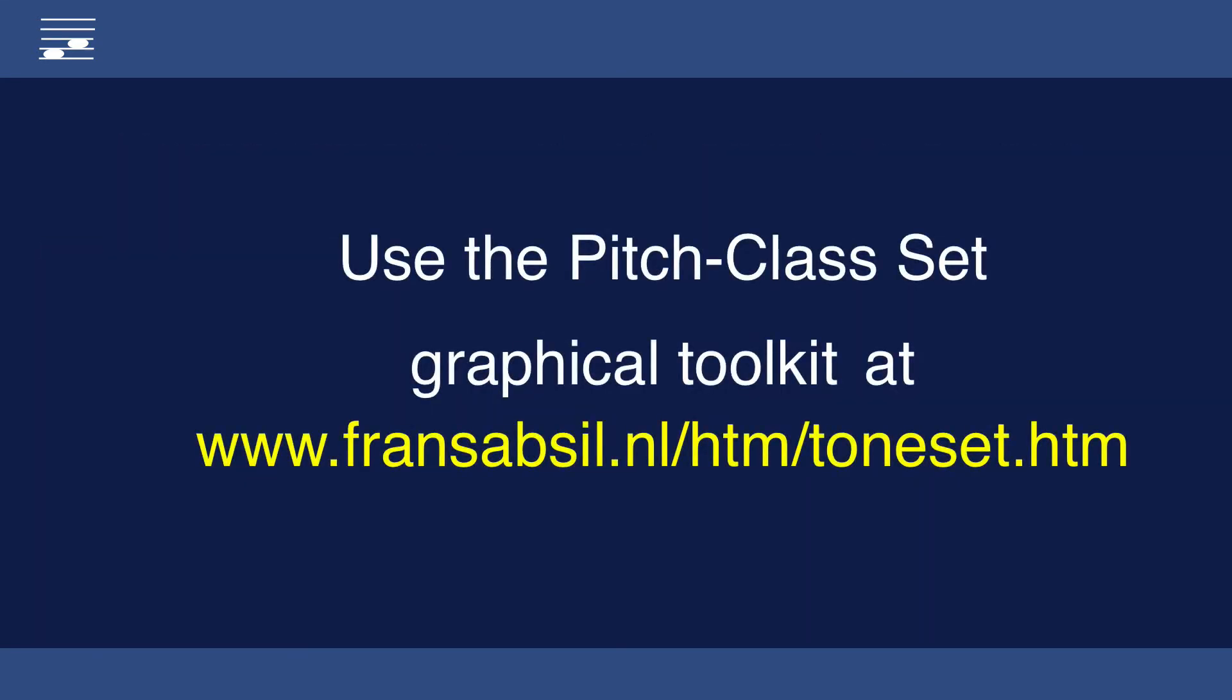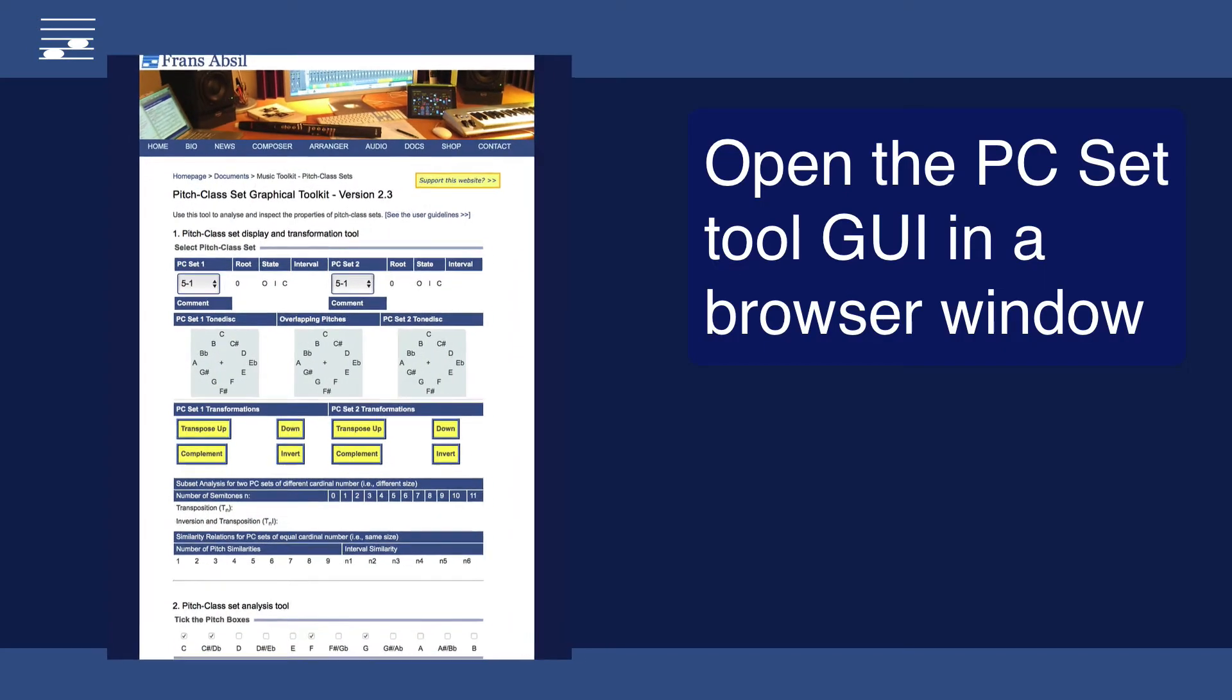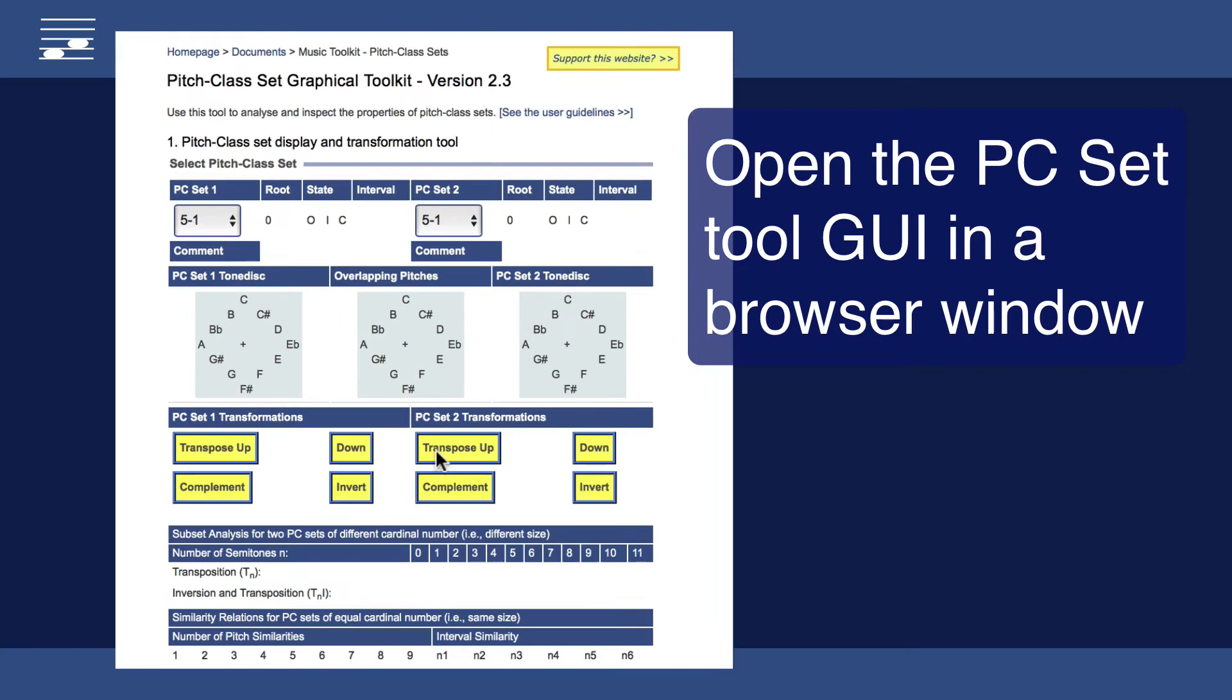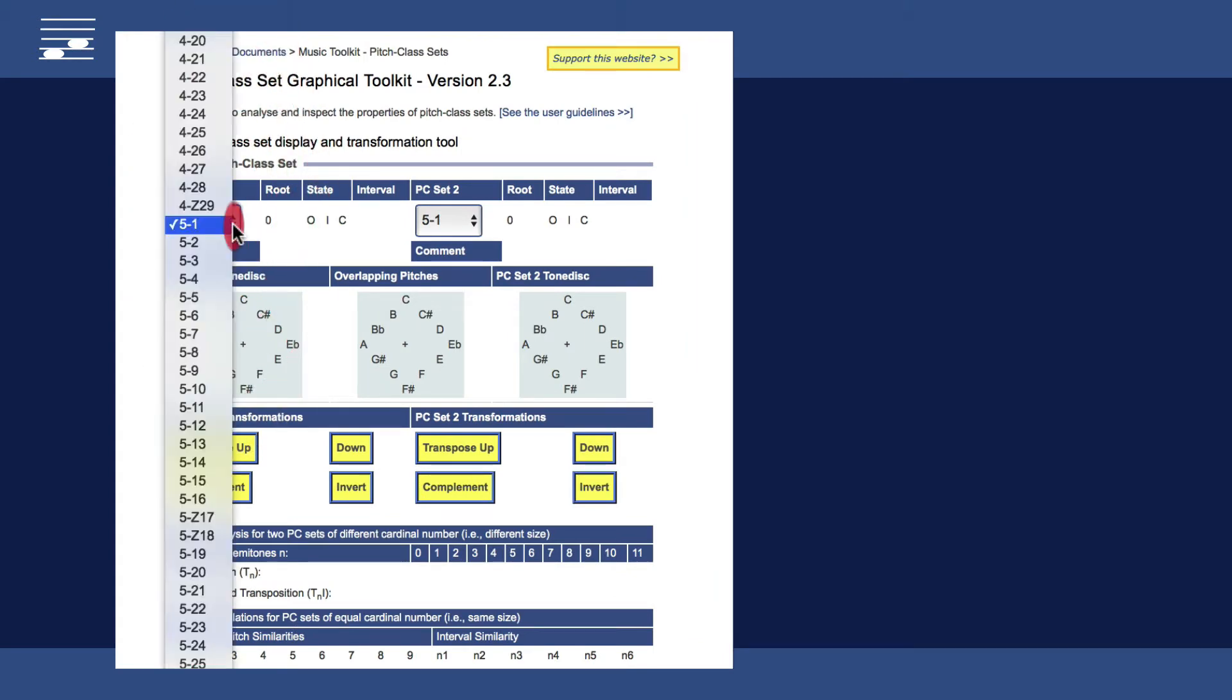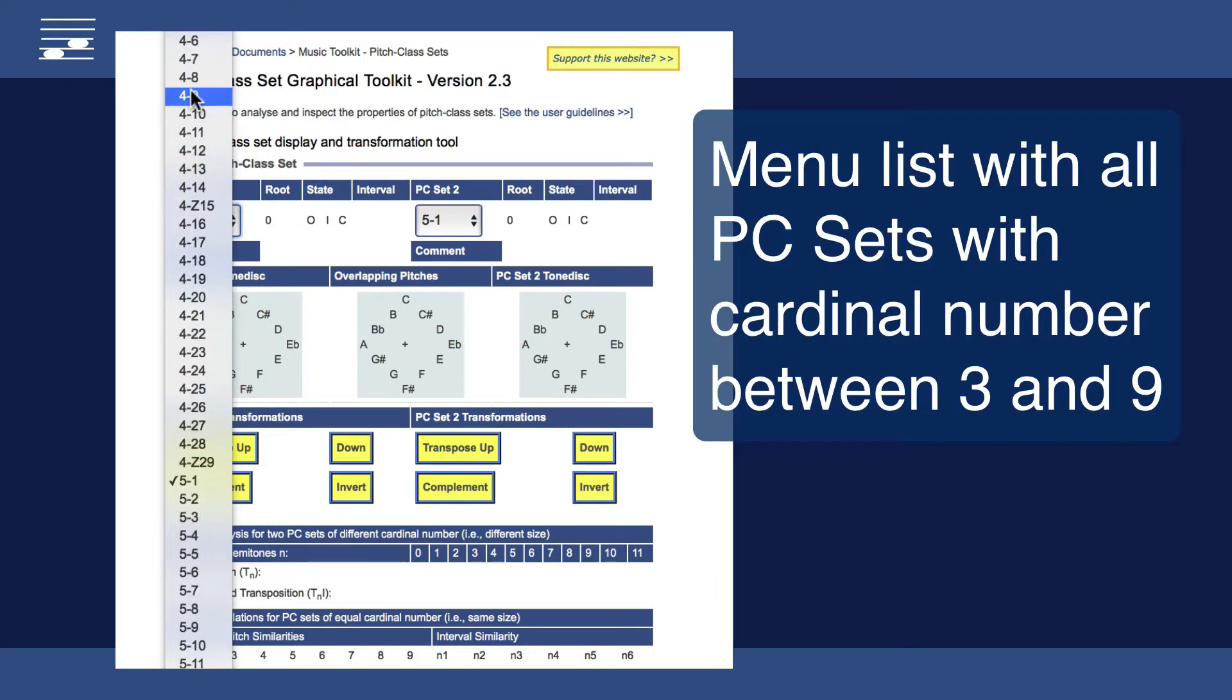I developed an online pitch class set graphical toolkit that I now will demonstrate. Open the tone set web page in the browser. Drop down menus at the top contain a list of all pitch class sets with cardinal numbers between 3 and 9.